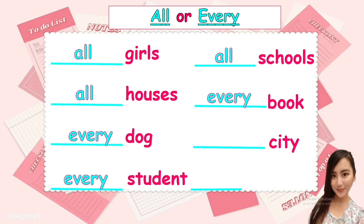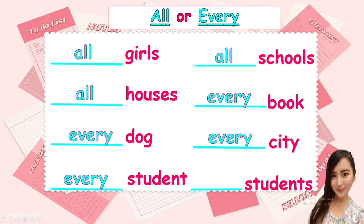Next, we have city. Is it singular or plural? It's singular, only one. So are we going to use all or every? The answer is every. Every city. And the last one is students. There's an S. Is it singular or plural? It's plural. So are we going to use all or every? The answer is all. All students.